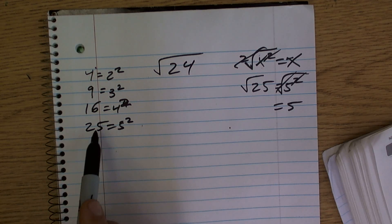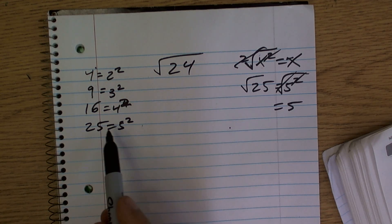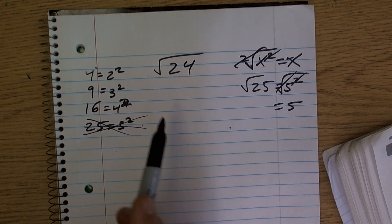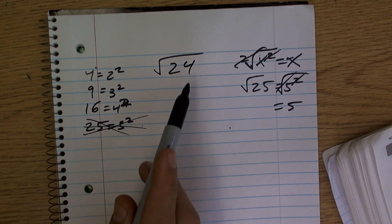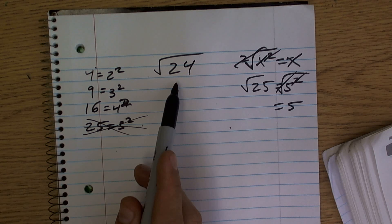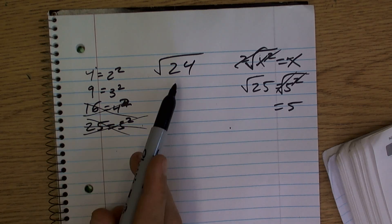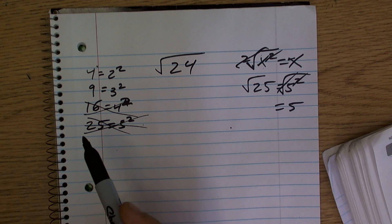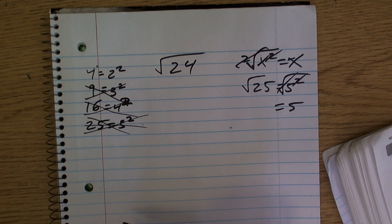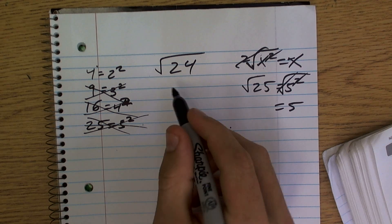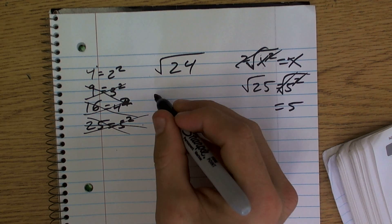So think about it. Obviously 25 does not evenly go into 24, so that's not going to work. Could I rewrite 16 as a multiple to equal 24? No. Does 9 evenly go into 24? No. Does 4 evenly go into 24? Yes, it does. So 4 evenly goes in there 6 times.